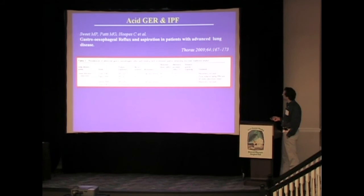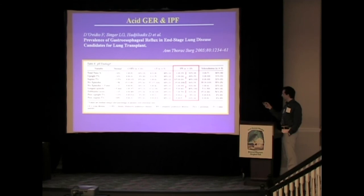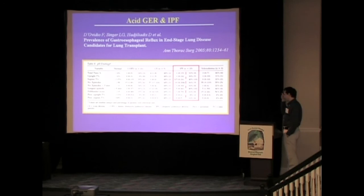In our patient population from Toronto — end-stage candidates for transplant — we had a lower prevalence of pH abnormality: the DeMeester score was abnormal in 32% of patients with IPF. In this cohort, we didn't have information on whether all were confirmed UIP, but the prevalence is definitely lower, both for distal and proximal pH testing.